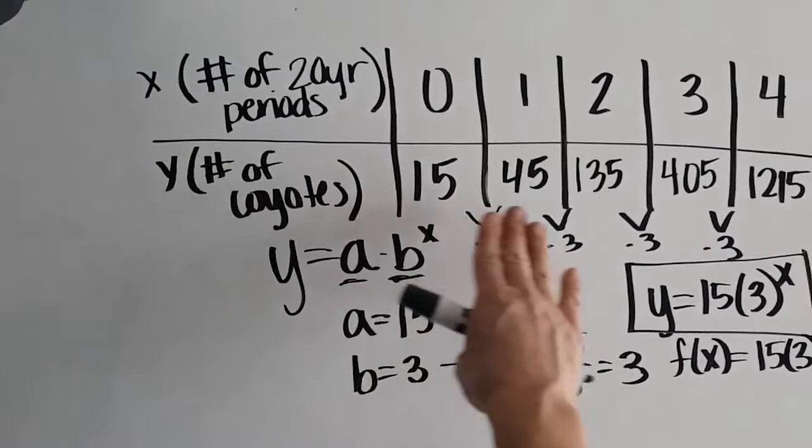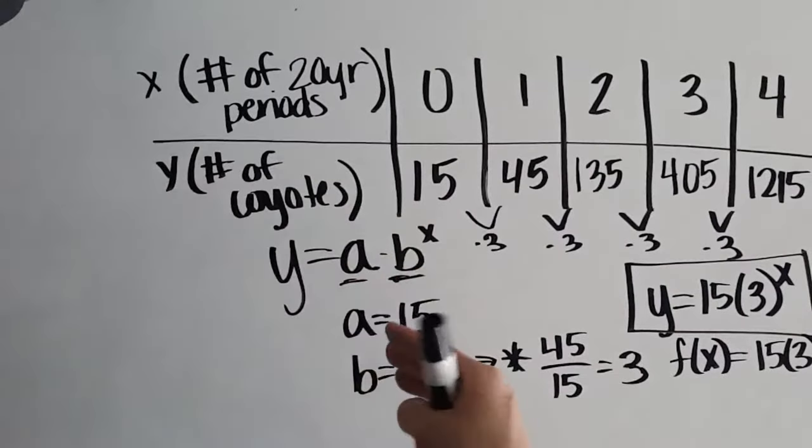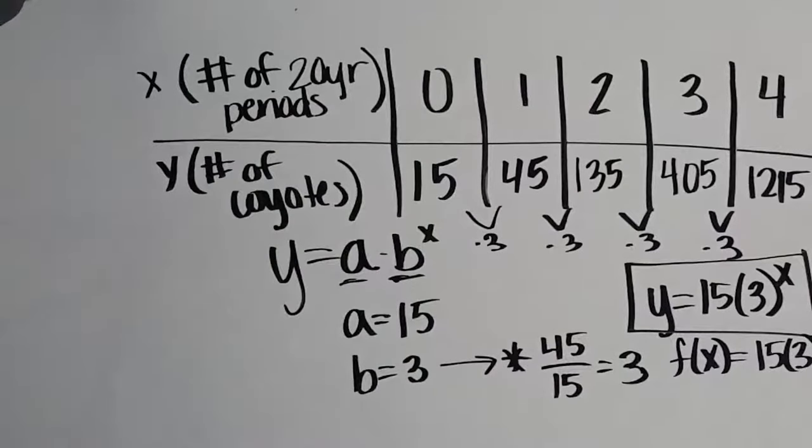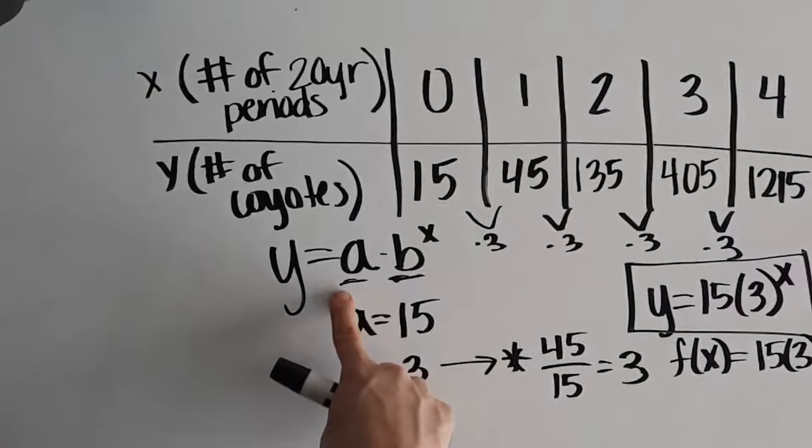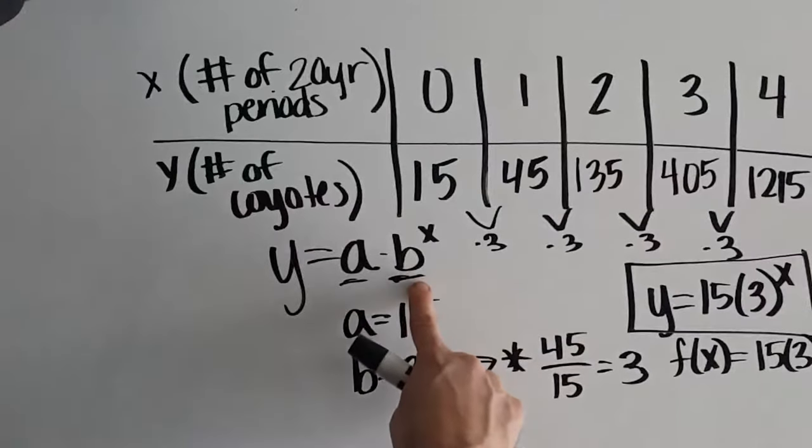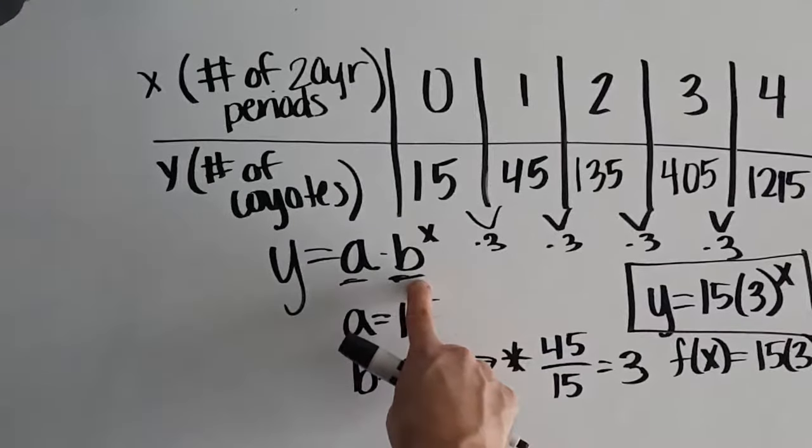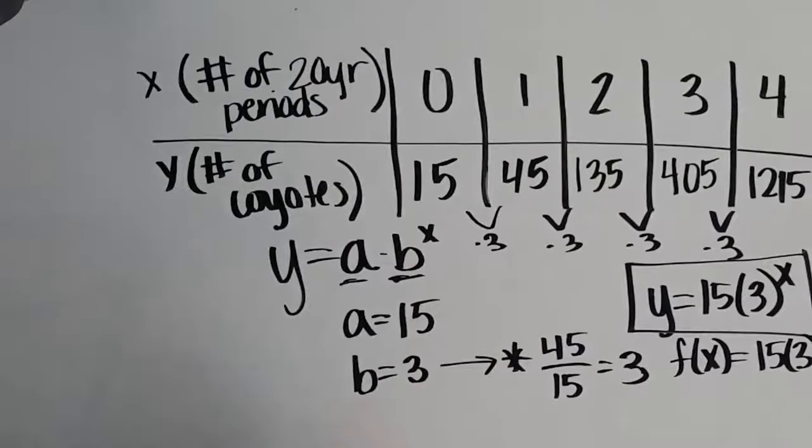So your information might not be given to you in a table. It might be a graph, or it might be a scenario and someone just says it in words. Either way, though, you're trying to identify that starting amount, a, and that multiplier, b.